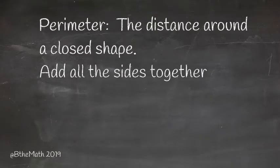Perimeter is the distance around a closed shape. All you do is add all the sides together.